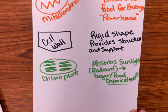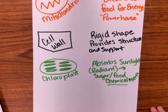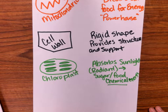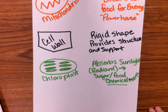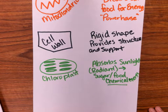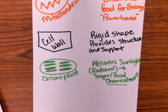Even if you eat meat, those plants are still essential. If you eat a steak, that cow had to eat grass, hay, or plant-based feed. The cow's body converts those plant products, and then we eat the meat. We're omnivores, so we eat plants too — but it all starts with chloroplasts making food.